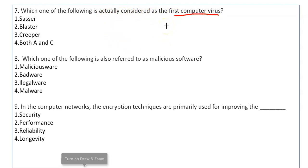Which one of the following is actually considered as the first computer virus? The first computer virus is Creeper. What is Creeper? It is a program that replicates itself and spreads from one computer to another, making copies of itself. It was created by Bob Thomas in early 1971 as an experimental computer program, but it became a virus.